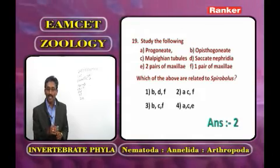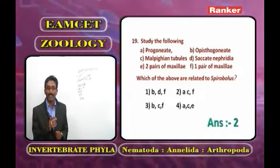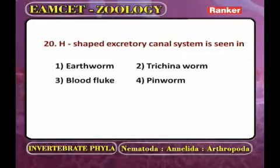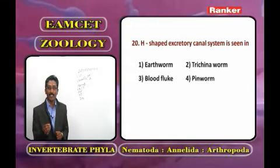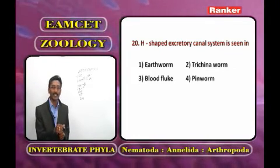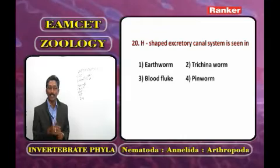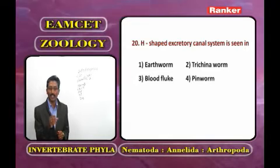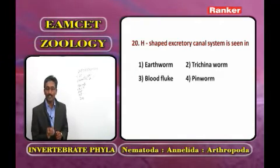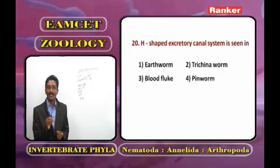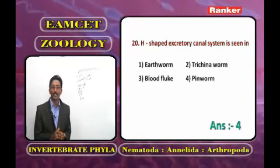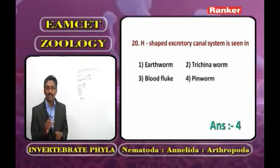The H-shaped excretory system is seen in phylum Nematoda. In Nematoda, excretion may be by a renette cell, excretory gland, or H-shaped excretory canal in the adult stage. One example is the pinworm, which comes under the class Phasmida. These are the important questions related to Nematoda, Annelida, and Arthropoda. In the next class, Mollusca and Echinodermata will be discussed.